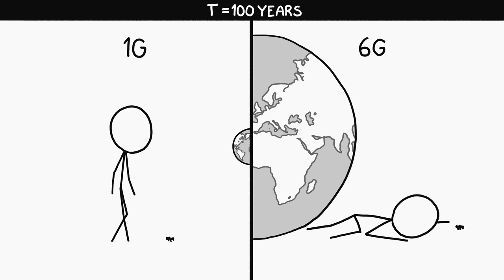After 100 years, we'd be experiencing over 6 g's of gravity. Not only would we be unable to move around to find food, but our hearts would be unable to pump blood to our brains. Only small insects and sea animals would be physically able to move around.